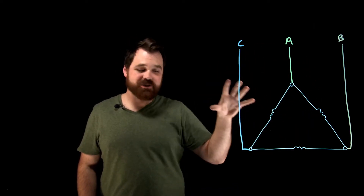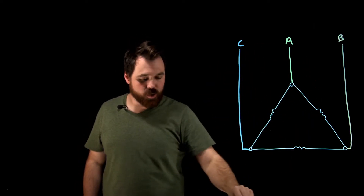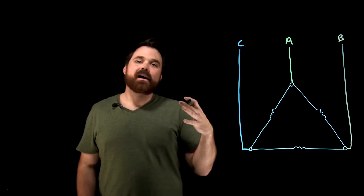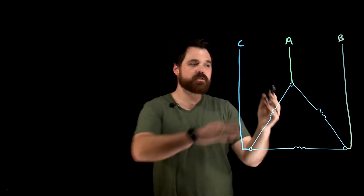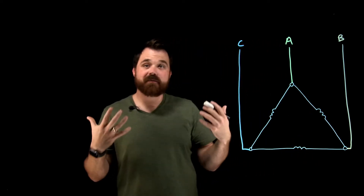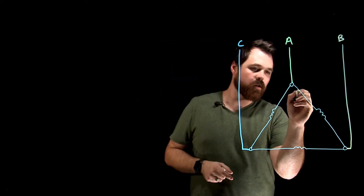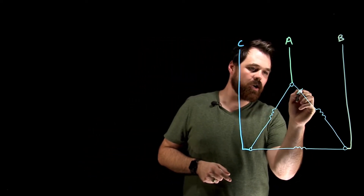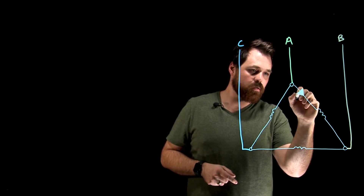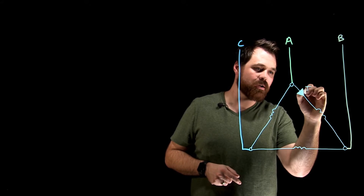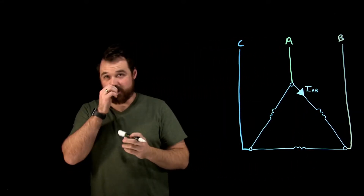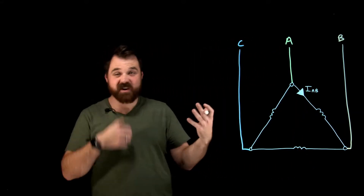So here I have my delta connected load. We have phase A, which is located between A and B. For phase A current, current is going to flow from A to B, and we call this I_AB. Those are our little subscripts, and we would call that our phase A current.